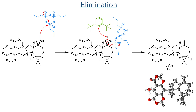With this critical bond now formed, all that remained was to install the correct functionality on the outer edges of the molecule. To this end, an elimination reaction was carried out using propane phosphonic anhydride. This is attacked by the hydroxyl group to activate it as a leaving group. The molecule is then deprotonated by di-tert-butylpyridine, forming the double bond in an 80% yield with a 5-to-1 mixture of alkene regioisomers. This compound could be crystallised, providing definitive proof of the stereochemistry.